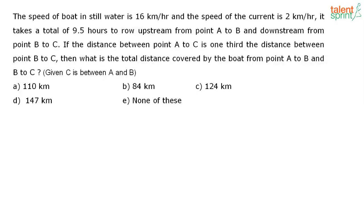The speed of a boat in still water is 16 kilometers per hour and the speed of the water current is 2 kilometers per hour. It takes a total of 9.5 hours to row upstream from point A to B and downstream from point B to C. If the distance between point A to C is one third of the distance between point B to C, then what is the total distance covered by the boat from point A to B and point B to C?